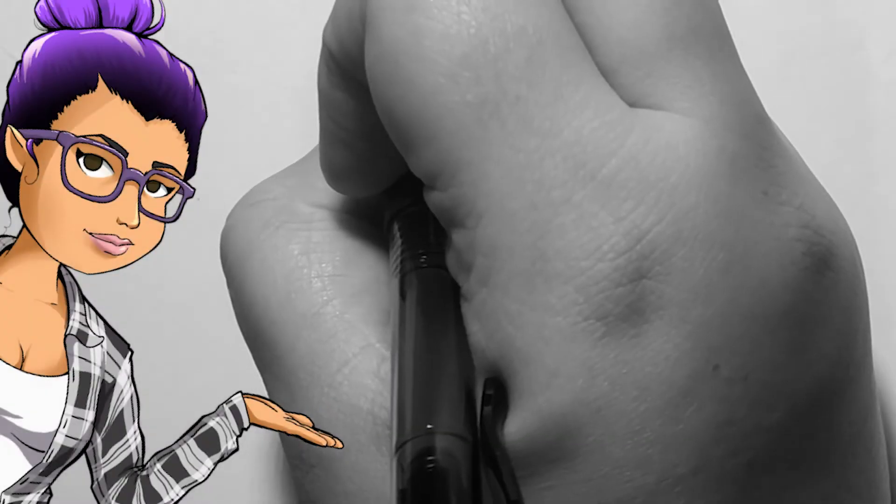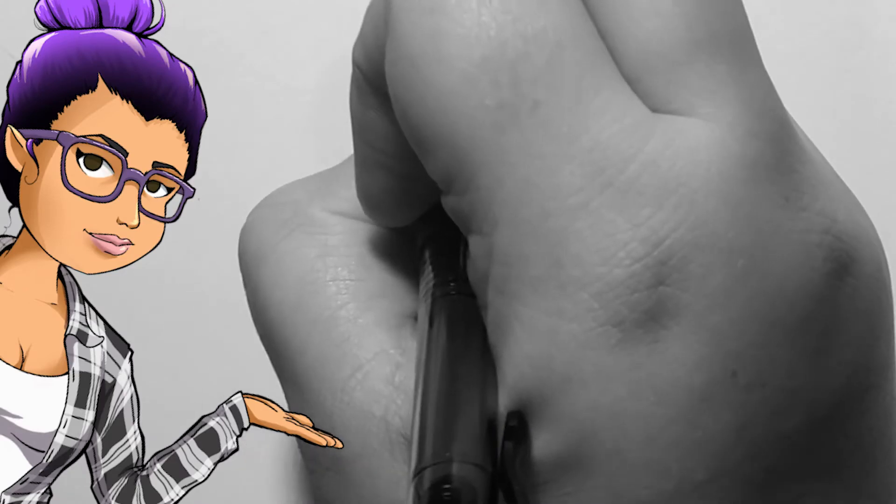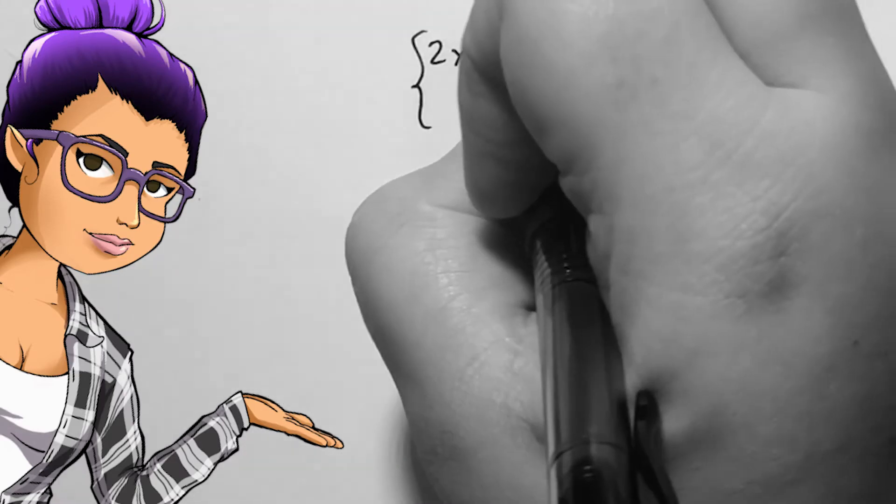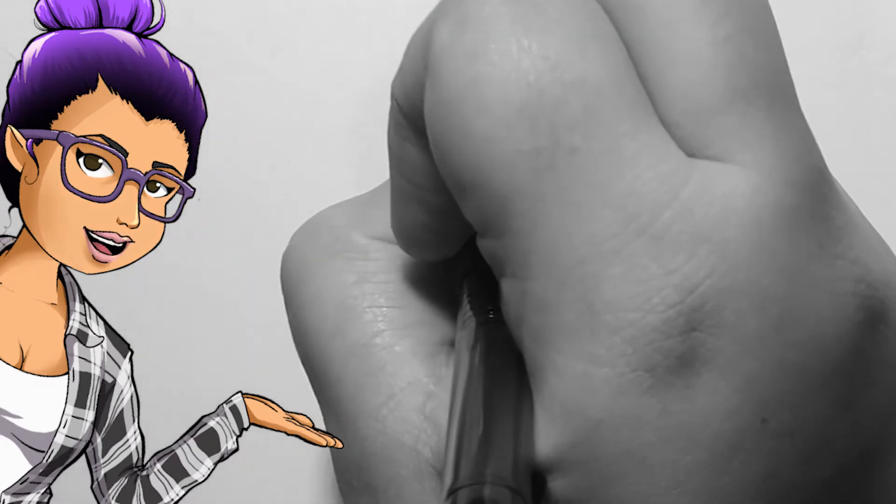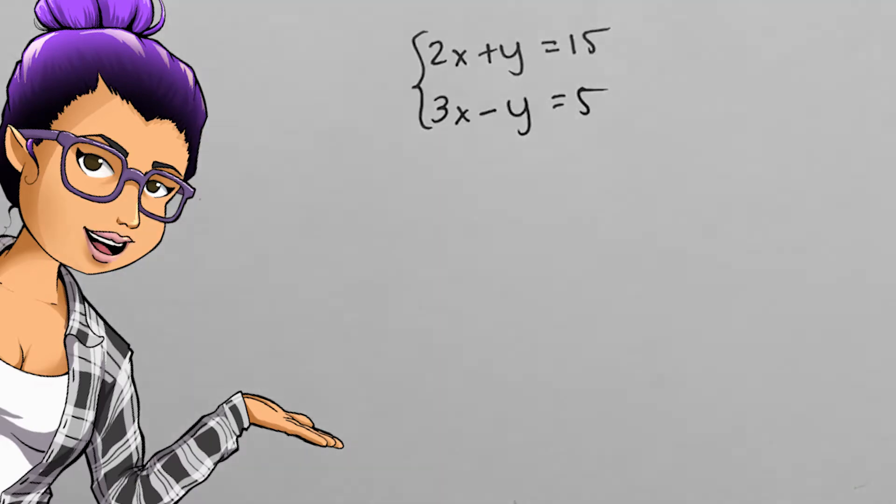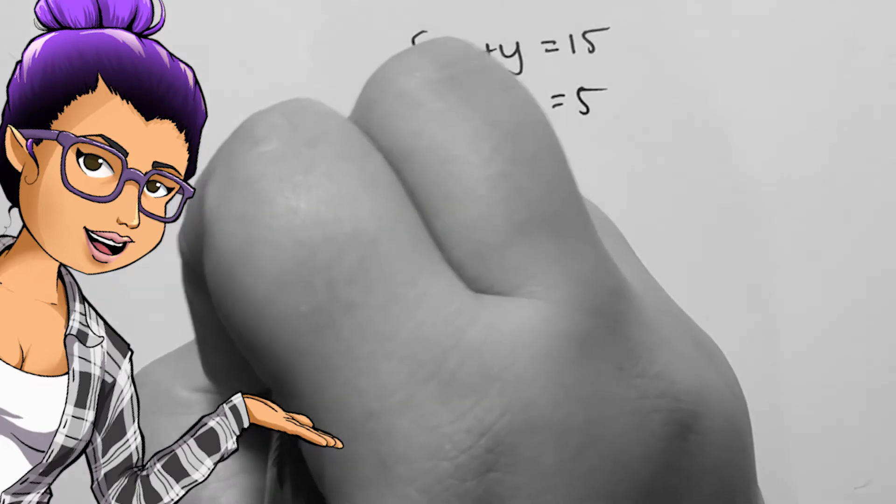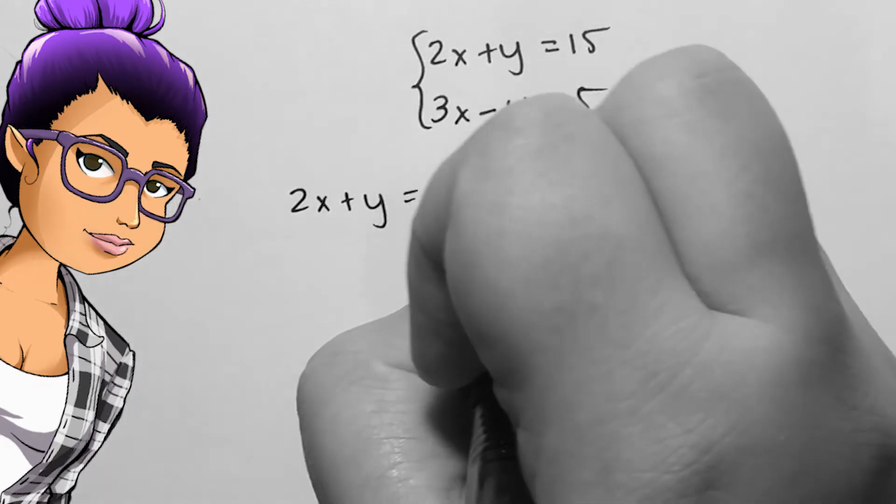We'll consider the system of equations in two variables 2x plus y equals 15 and 3x minus y equals 5. We want to know what xy point, if any, these two lines intersect. The method we'll use here is the method of substitution.